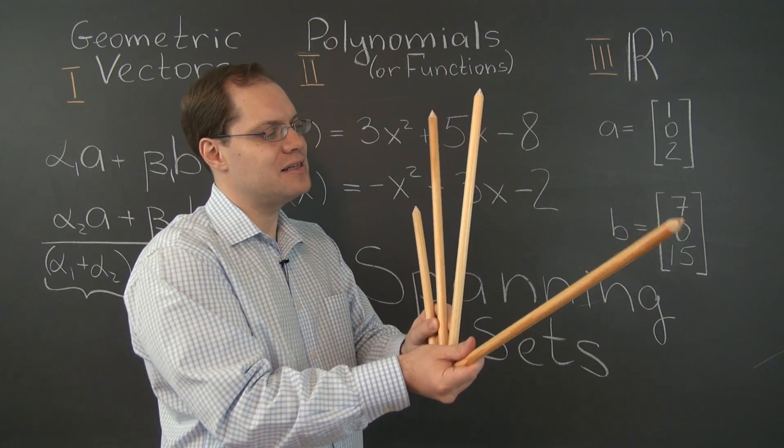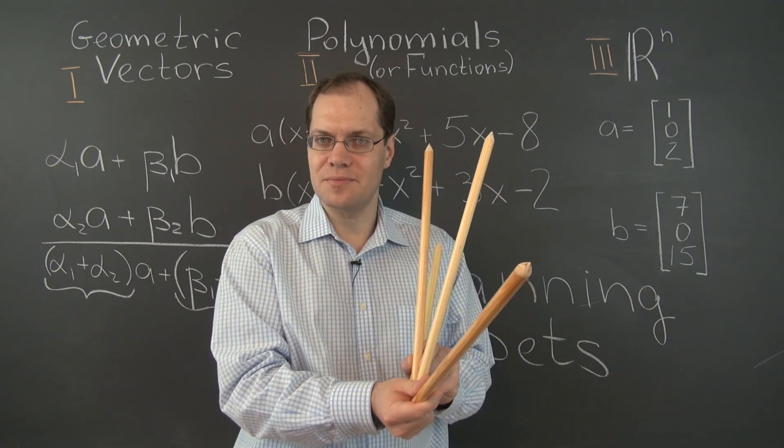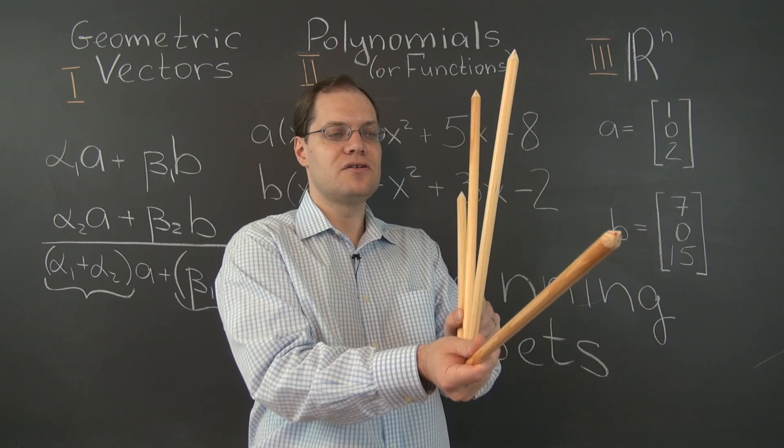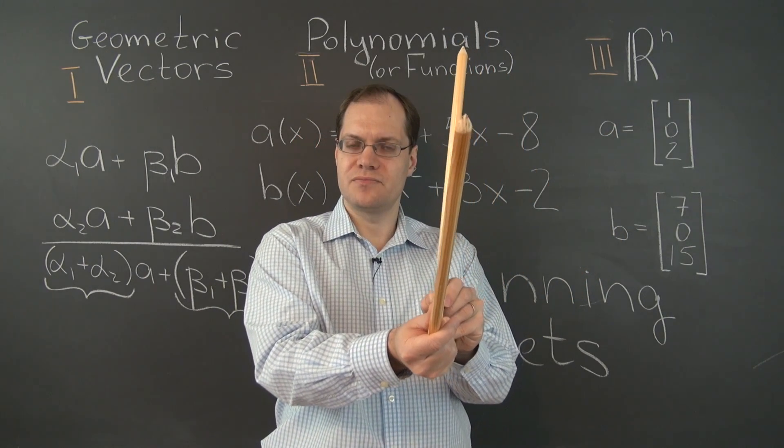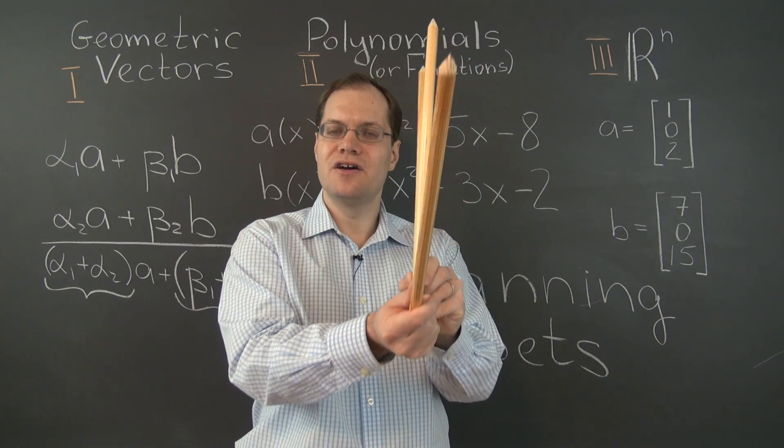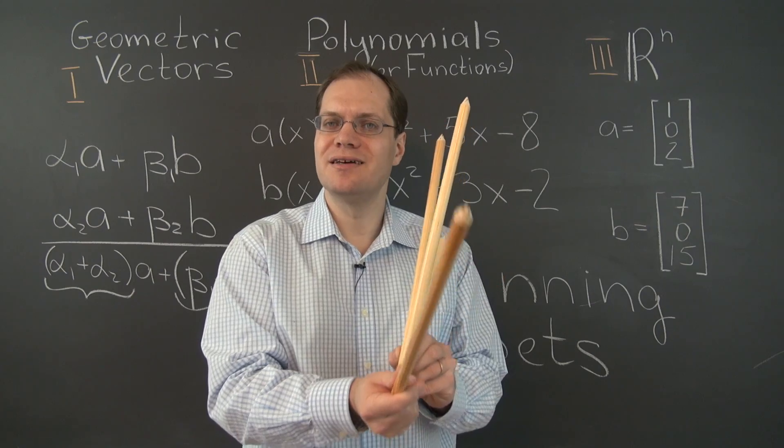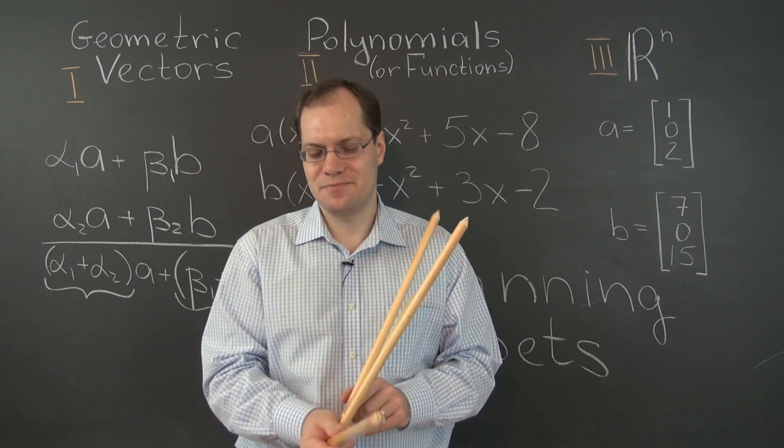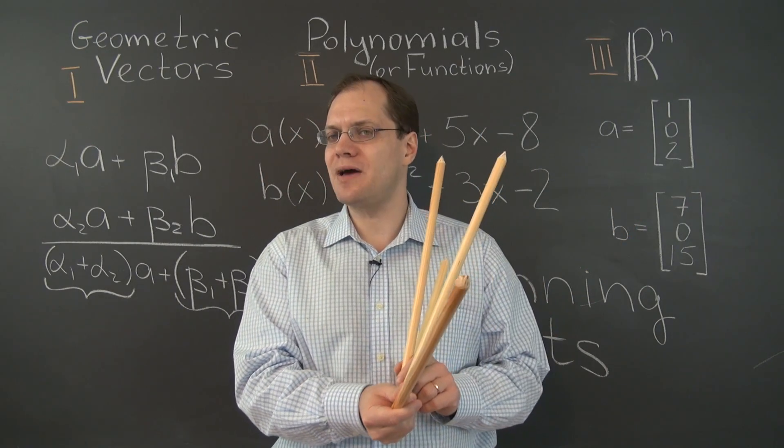And you're seeing that the concept of a spanning set is a relative concept. Because this set of vectors actually spans the plane they're in. So with respect to the plane they're in, they are a spanning set. It's just that for the entire space they're not a spanning set. So I think these few examples give you a perfectly good idea of what a spanning set is.